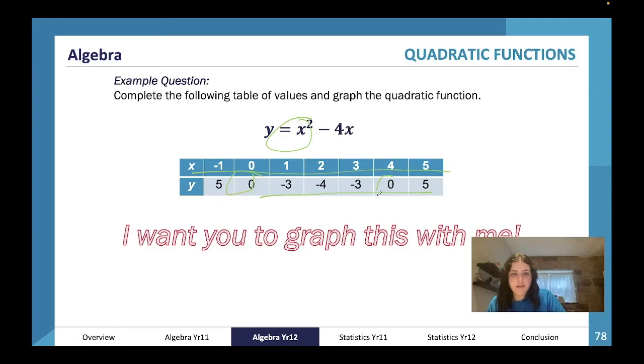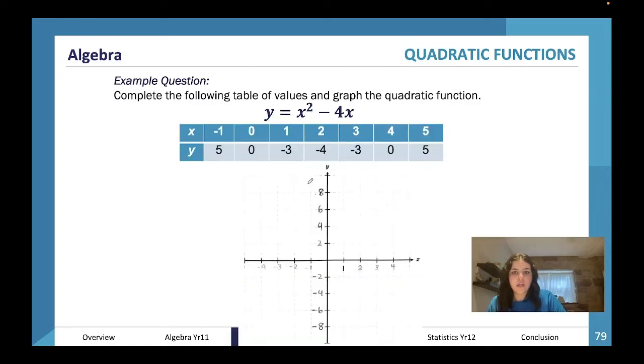Now we're going to graph this. One important thing I want you guys to notice about parabolas: numbers are going to repeat and they're going to mirror. This is how we know it's a parabola. The turning point is going to be the number that isn't repeated, which is negative 4. The negative 4 is going to be our turning point.